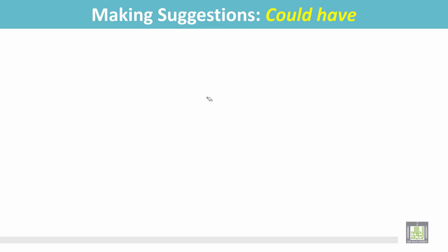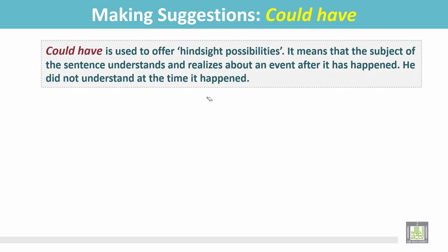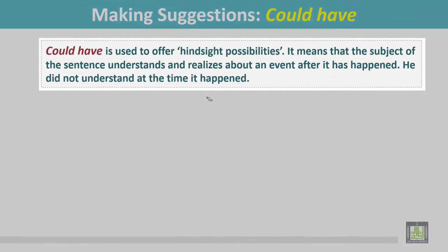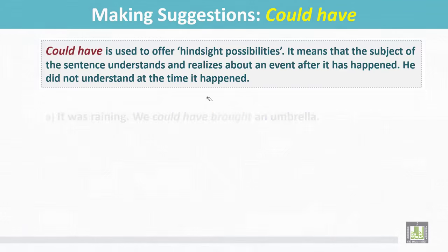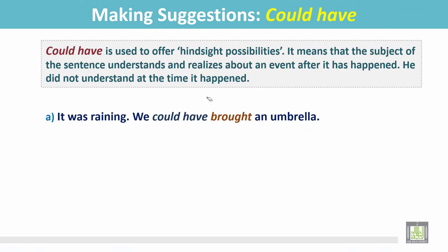Making suggestions: 'Could have' is used to offer hindsight possibilities. It means the subject of the sentence understands and realizes about an event after it has happened — he did not understand at the time it happened. For example: 'It was raining. We could have brought an umbrella.' The subject did not realize it was going to rain, but when it started to rain, the subject realizes.